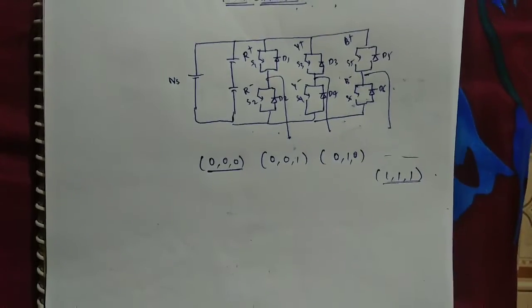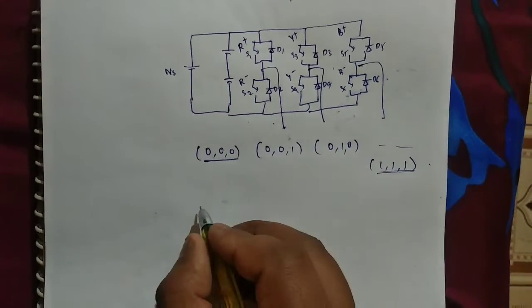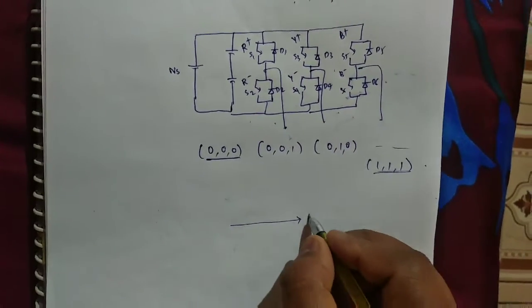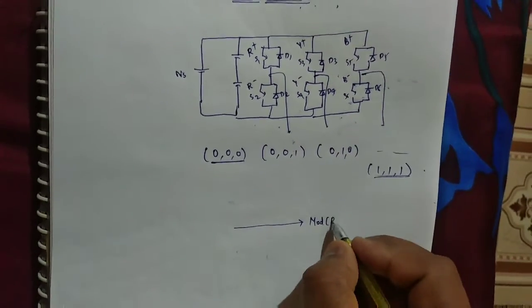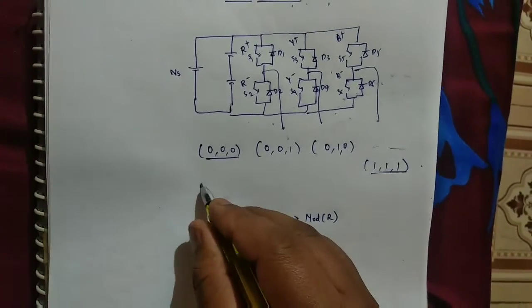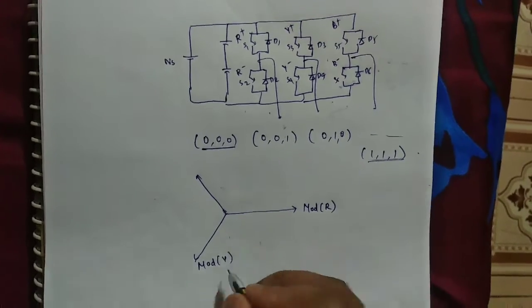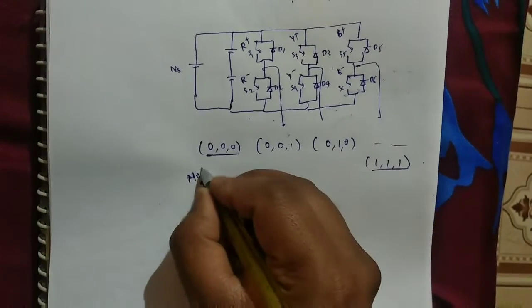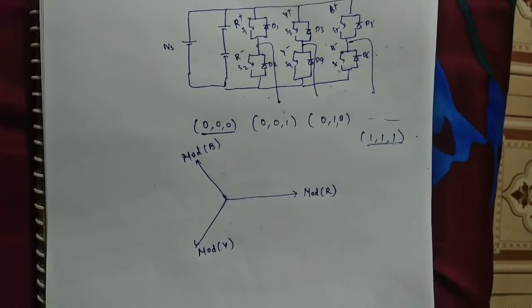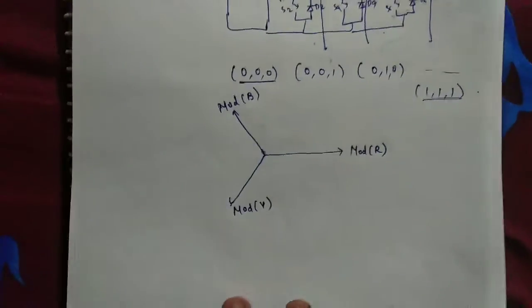In this we will choose three modulating signals: for R modulating signal, Y modulating signal, B, and it is displaced 120 degrees.